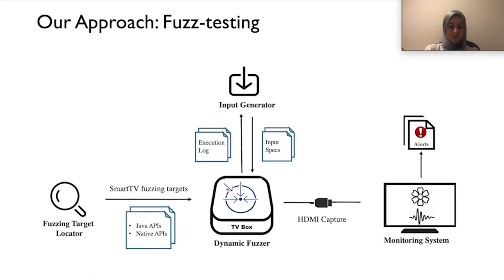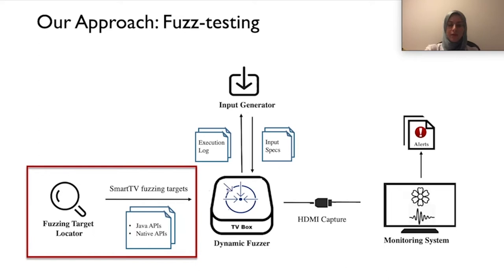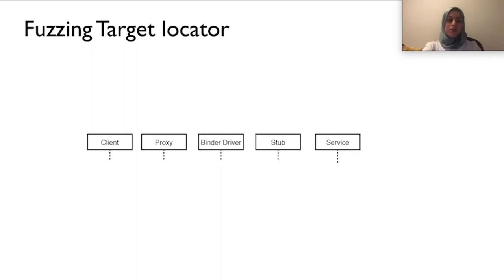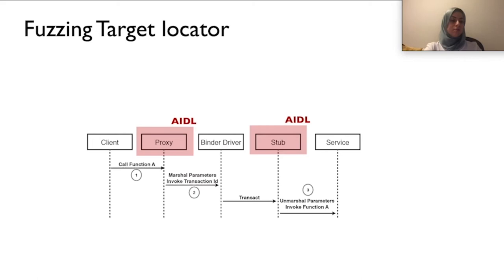The fuzzing target locator recovers APIs at the Java or native layers. We dive into the details of how APIs can be invoked via the Binder IPC mechanism. To implement a system service, framework developers define its interface as an AIDL description. A client app can invoke an API, say method A, via Binder transactions. Specifically, the client proxy marshals the parameters and maps the method call to a raw transaction ID, then initiates the transaction call. The stub on the server side unmarshals the data and calls the actual server implementation, and also marshals replies if any.